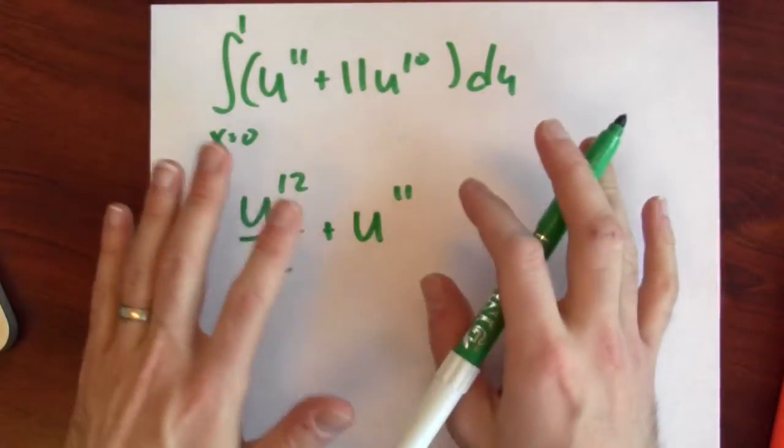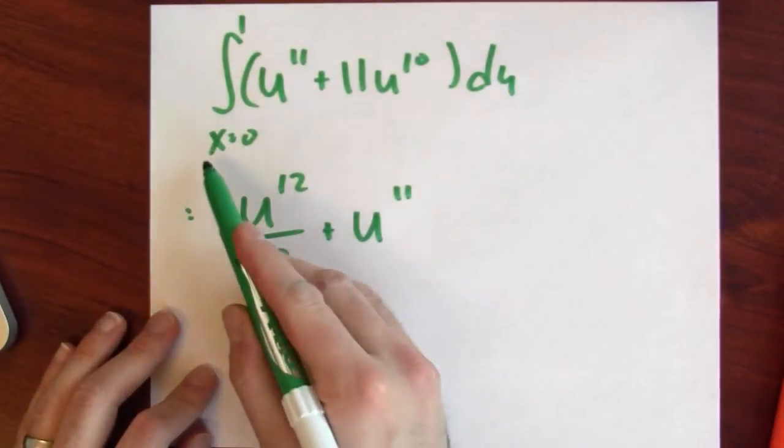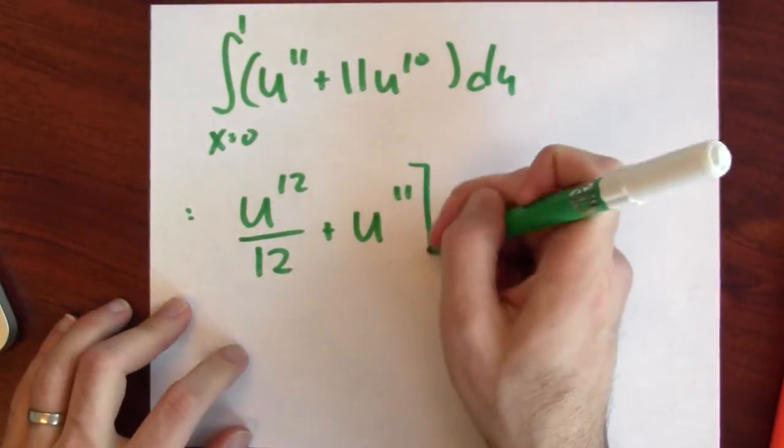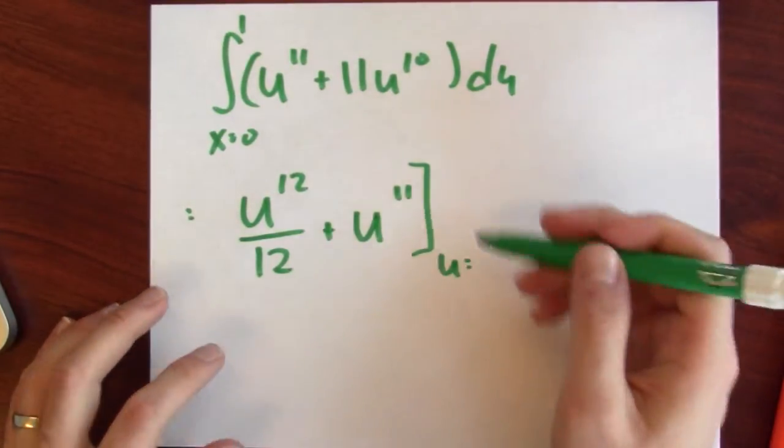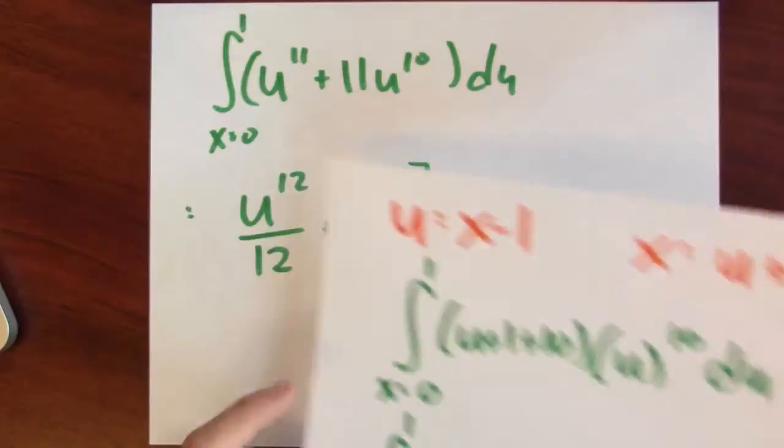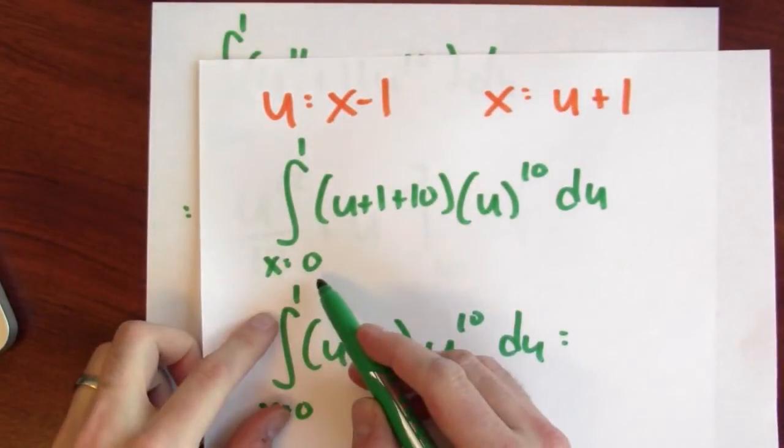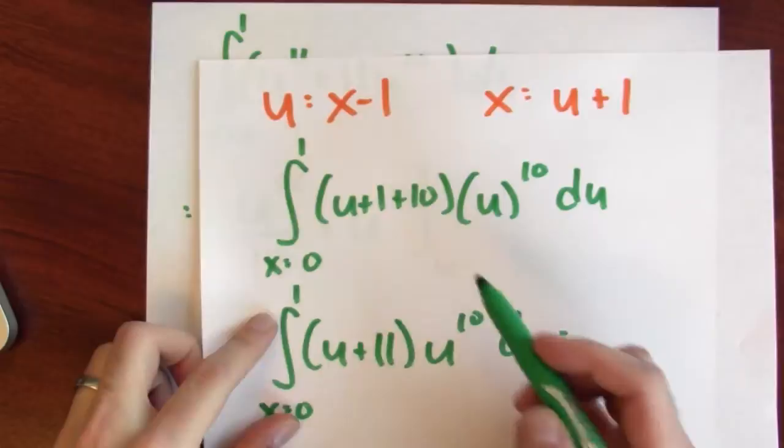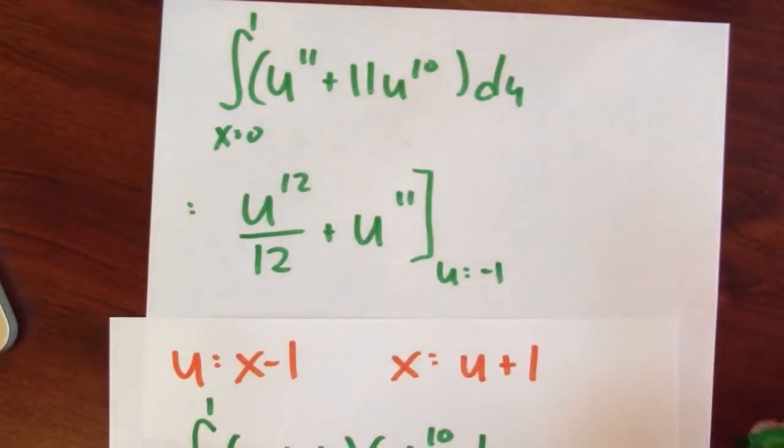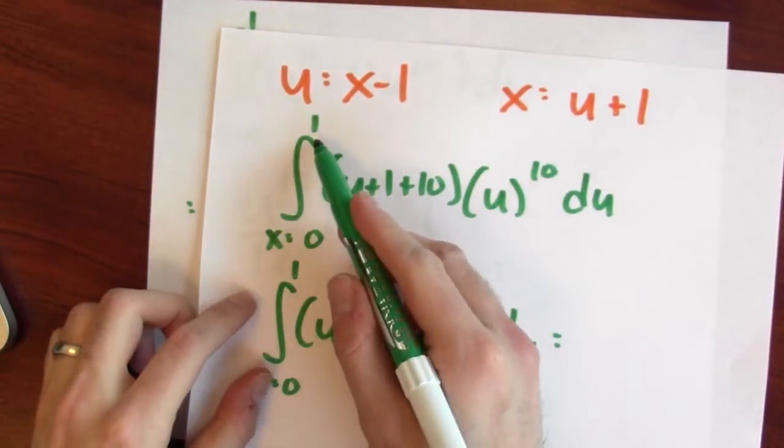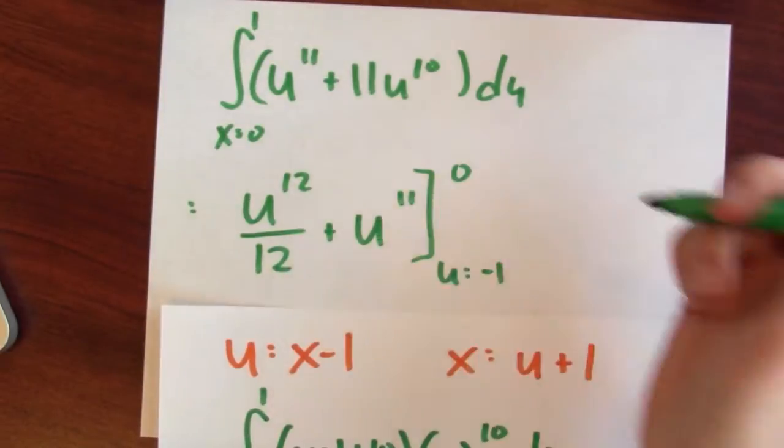But now I've got a little bit of an issue, right? I've got x going from 0 to 1. So here it's u going from what to what? Yeah, so how do we deal with those end points? Well, when x is 0, u is minus 1. So I'll put a minus 1 there. And when x is 1, u is 0. So I'll put a 0 there.